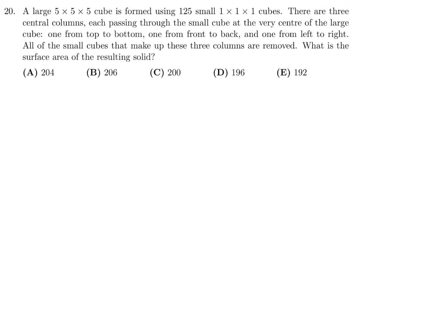A large 5x5x5 cube is formed using 125 small unit cubes. There are three central columns, each passing through the small cube at the very center of the large cube. One from top to bottom, one from front to back, one from left to right. All the small cubes that make up these three columns are removed. What is the surface area of the resulting solid?